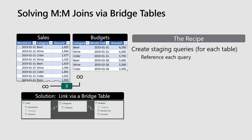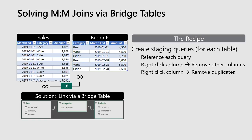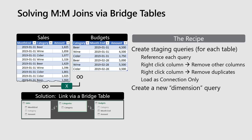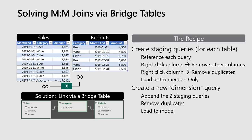The recipe: we create what I call a staging query for each of our tables — sales and budgets. I reference sales first, right-click on the category column, remove other columns, right-click and remove duplicates. That leaves me with a list of beer, wine, cider. I load that as a connection-only query — it doesn't get loaded to a table or the data model, it's just ready to be called later. Then I do the exact same thing for the budgets table. Once I have both, I reference these two together and append them, then remove duplicates — and that one I load to the data model. This enforces referential integrity so that if somebody adds 'liquor' to one table and 'spirits' to another, I won't have orphaned records that don't line up.